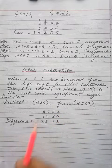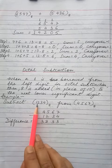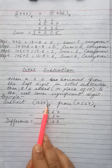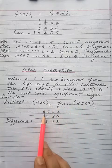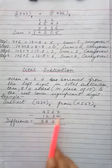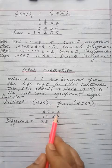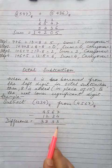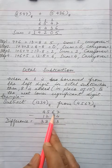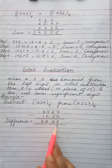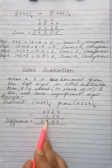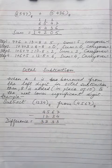Now let us take some examples. Subtract 1234 from 4567: 7 minus 4 is 3, 6 minus 3 is 3, 5 minus 2 is 3, 4 minus 1 is 3 again. This is simple — without any borrow.